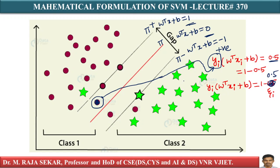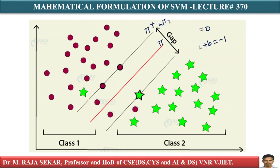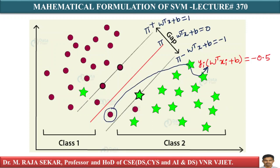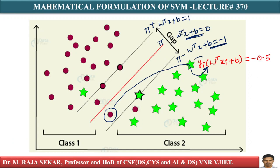Let me consider one more point. There is another point — assume it is halfway between W transpose X plus B equal to 0 and W transpose X plus B equal to minus 1. It is half the way between π and π minus. So for this point, yi into W transpose Xi plus B — your yi is positive — so 1 into minus 0.5, you will get minus 0.5.